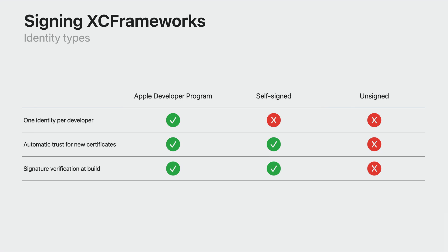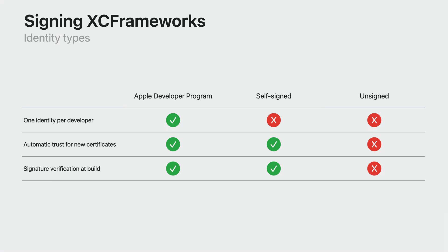Xcode will also alert you if the Apple Developer Program certificate has been revoked by Apple. This can happen if Apple determines that the developer account is malicious. These alerts will be rare, and will automatically ensure you don't build your app until you've resolved the issue. If this does happen, Xcode will offer to let you remove the XCFramework from the project. For self-signed identities, Xcode will still compare the certificate's SHA-256 fingerprints with the one that was previously added to the project. It will show you an alert if the identity has changed or if the contents of the dependency have been modified. You may need to contact the XCFramework author to ensure the fingerprint matches what they have used, or an XCFramework author can publish this information. And that's how digital signatures work on XCFrameworks.